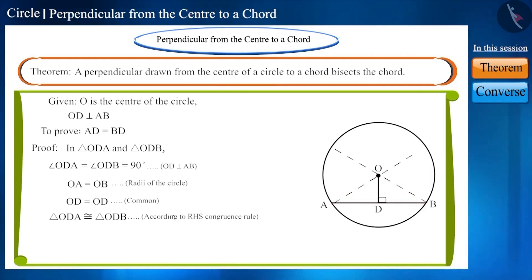We know that corresponding parts of congruent triangles are equal. Therefore, the corresponding sides of these triangles, side DA and side DB will be equal. That means AD is equal to BD.